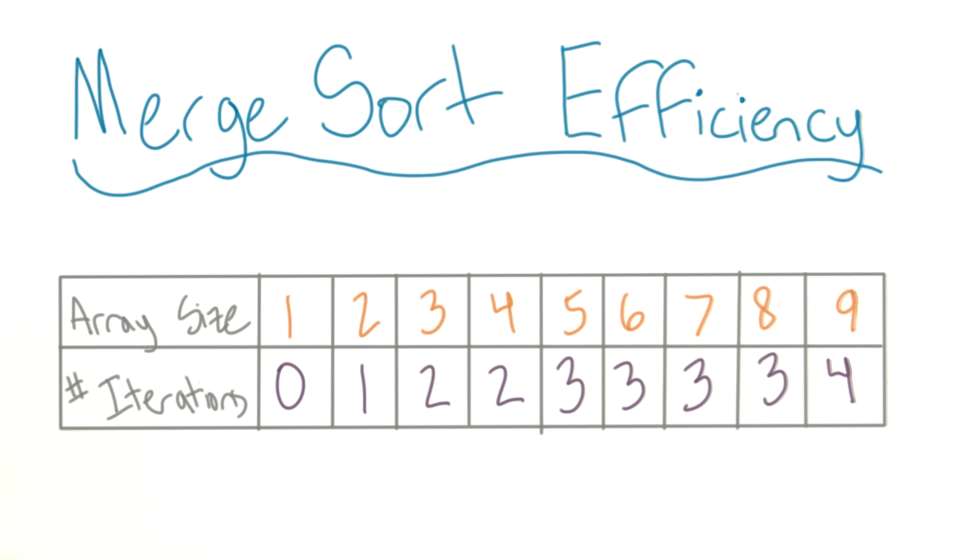Remember in binary search, when we had a similar table, and the number of iterations incremented at every power of two? Well, we actually have something pretty similar here. Instead of incrementing at the powers of two, this time we're incrementing one after every power of two. So in the binary search video, I proved why the number of iterations would be equal to log n. So if you need a refresher, you can go back there.